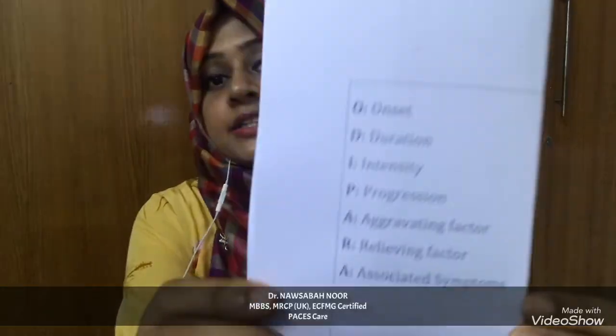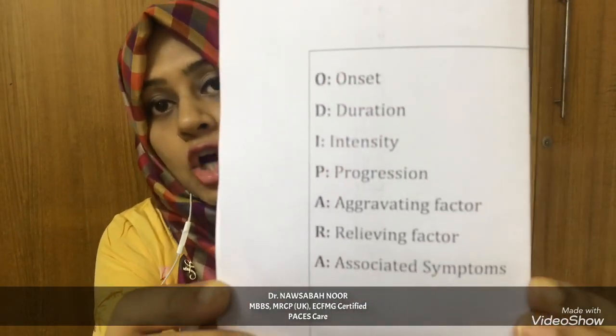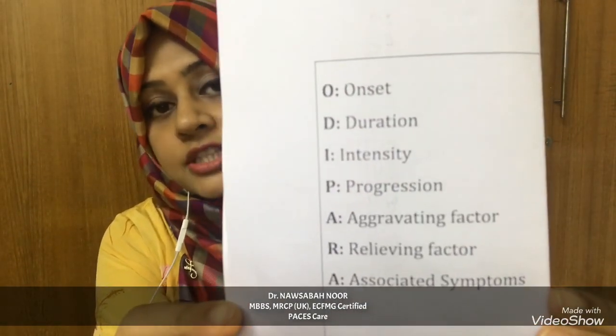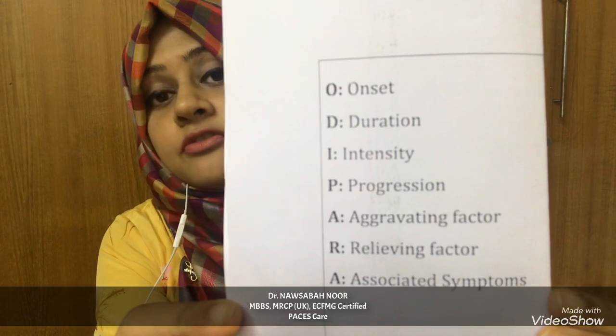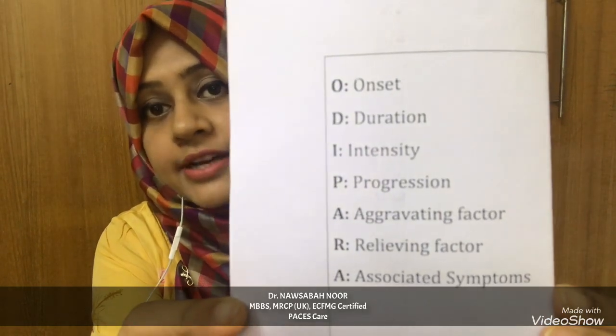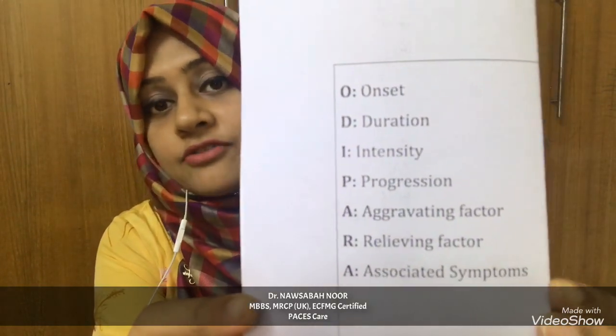For the analysis of the chief complaint, you can remember the mnemonic OD PARA: O for onset, D for duration, I for intensity, P for progression, A for aggravating factors, R for relieving factors, and A for associated symptoms.